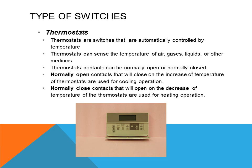Thermostats are switches controlled automatically by temperature sensing. They can sense the temperature of air, gases, liquids, and other mediums. Thermostat contacts can be normally open or normally closed, or sometimes a combination of both — such as when controlling both heating and cooling off the same thermostat. Normally open contacts that close on increase of temperature are used for cooling systems, while normally closed contacts that open on a decrease of temperature are used for heating.